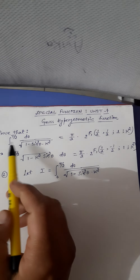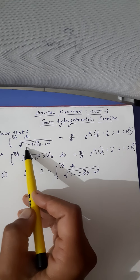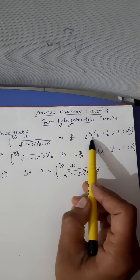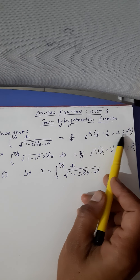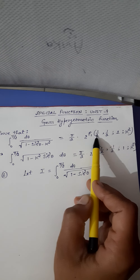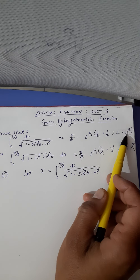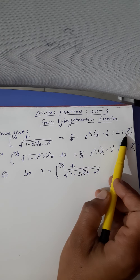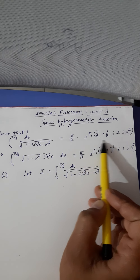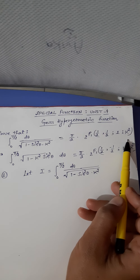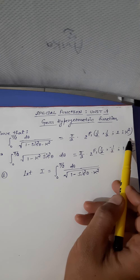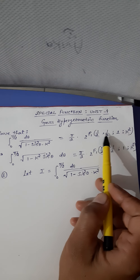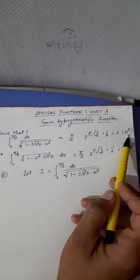The first question is: integral from 0 to π/2 of dθ divided by under the root of (1 minus sin²θ · k²), equal to π/2 into 2F1(1/2, 1/2; 1; k²). Here alpha equal to half, beta equal to half, gamma equal to 1, and x equal to k² — this is the notation of Gauss hypergeometric function 2F1(α, β; γ; x), where alpha, beta, gamma are parameters and x is the variable.